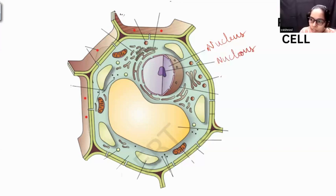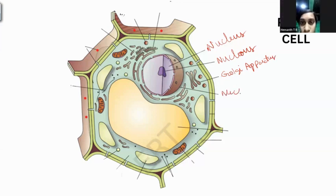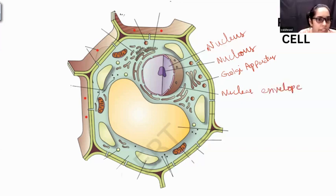Then this one? Golgi apparatus. One more, one more. What is this? Nuclear envelope. Good job. Good job. Okay, next.